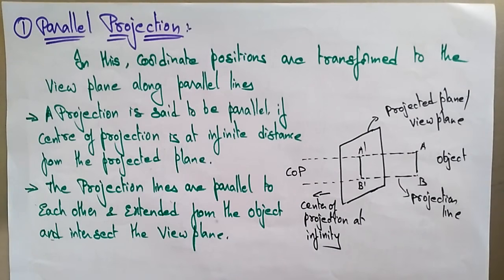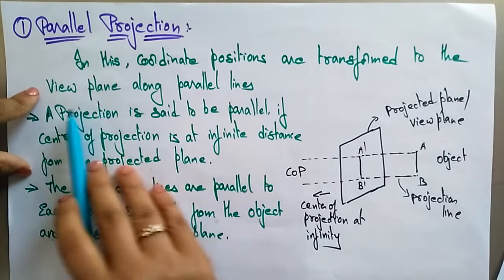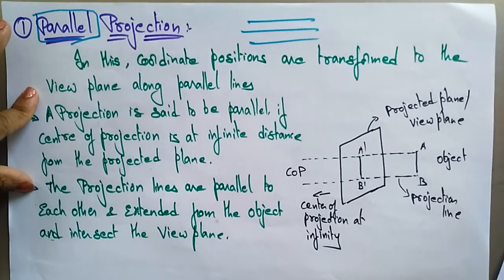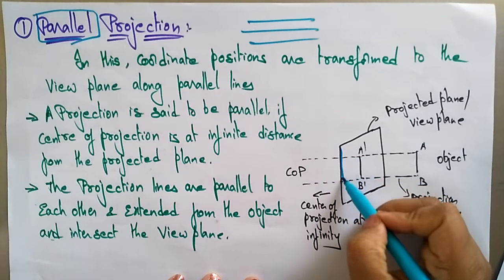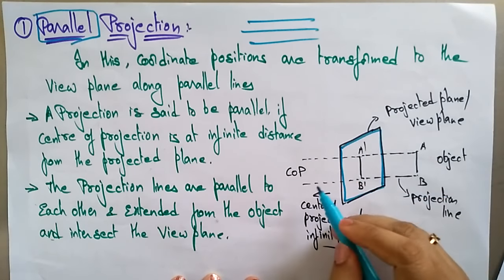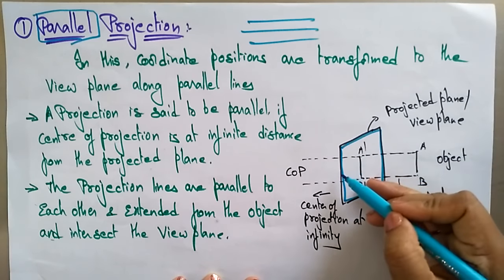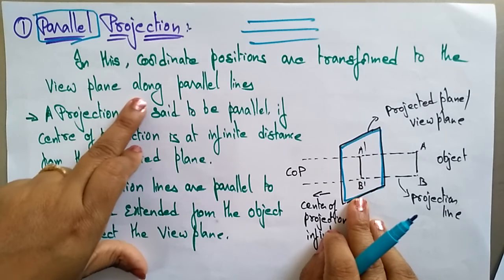For parallel projection, the coordinate positions are transformed to the view plane along parallel lines. The name 'parallel' tells you the projection will be in the form of parallel lines. Here, this is the projection plane where the transformation takes place — we call it the projection plane or view plane — where the 3D object is converted into a 2D object.